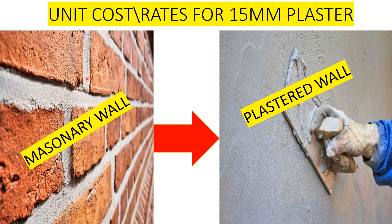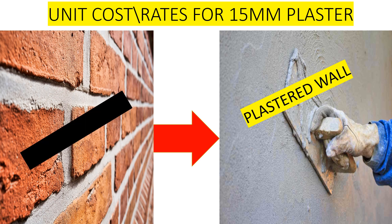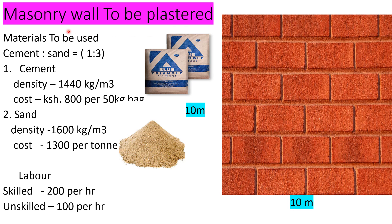After constructing a brick wall or a masonry wall, the next thing that comes to mind is how you are going to plaster it. In this tutorial, we are going to look at the unit cost or rates for plastering a 15 millimeter thick plaster, covering the cost of materials and labor. Watch until the end, and if you are new here, kindly subscribe and don't forget to leave a comment.